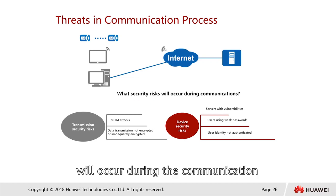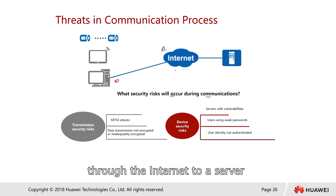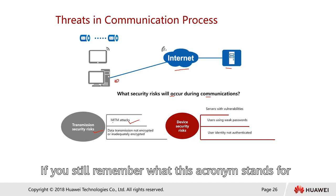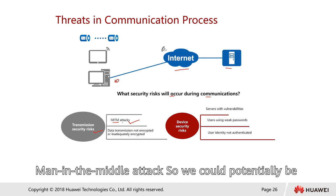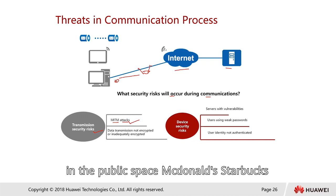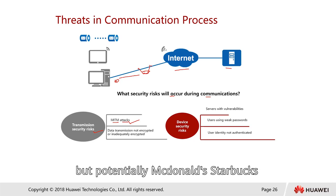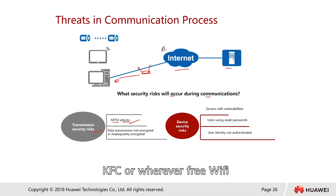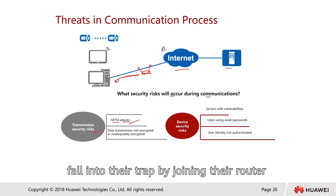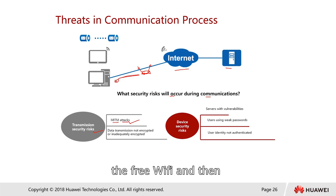There are many security risks during the communication process. One transmission risk is potentially being a victim of a Man-in-the-Middle (MITM) attack. For example, if somebody joins an anonymous Wi-Fi router in a public space like McDonald's or Starbucks, they could fall into a trap — joining a rogue free Wi-Fi router and becoming a victim of a man-in-the-middle attack.